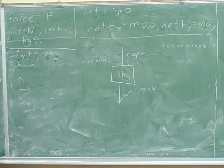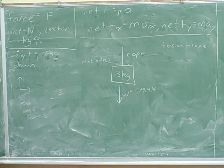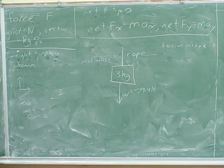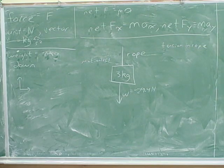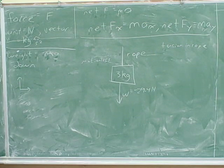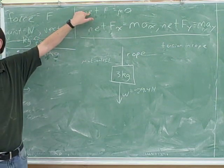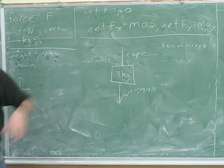What you're going to be doing now in the course is learning a whole bunch of special forces: the weight, which is the gravitational force; the tension, which is the rope force; the normal force, which is the force from a surface; the frictional force, which is another force from a surface; the spring force, which is the force from a spring. We're just going to learn a bunch of different special forces and plug them into the net force equation.